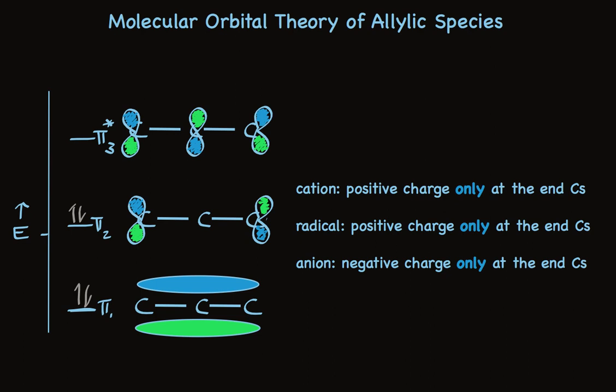And one last question for you. Which allylic system gains most stability from these MOs? The cation, the radical, or the anion? Well, take a look. The cation has electrons only in the more stable bonding pi-1 MO. So it gains the greatest stability as an allylic cation. The allylic radical gains extra stability as well, but it does have an electron in pi-2. And the anion has two electrons in pi-2. So of these three allylic systems, the allylic anion will enjoy the least special stabilization. MO theory of pi-systems is a very powerful tool.